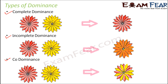Now we will make things more complicated by considering two traits simultaneously. For example, a plant that is tall with round seeds crossed with a plant that is dwarf with wrinkled seeds. We are now considering two contrasting traits, and all the calculations will become more involved.